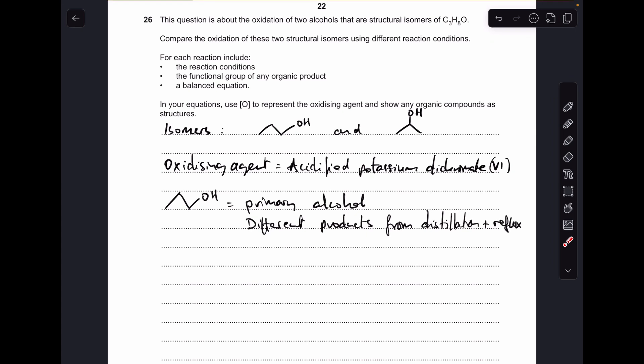So starting with propane-1-ol I'm just going to say that it's a primary alcohol and that means we're going to get different products from distillation and reflux. So all I'm going to do now is go through the two types of oxidation starting with distillation.